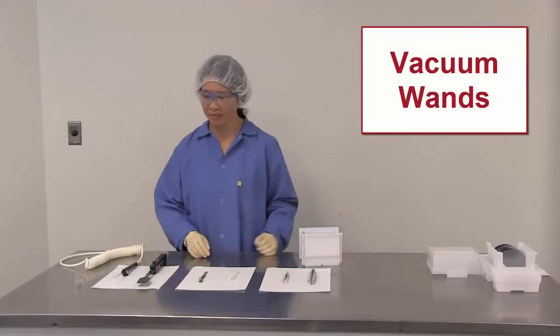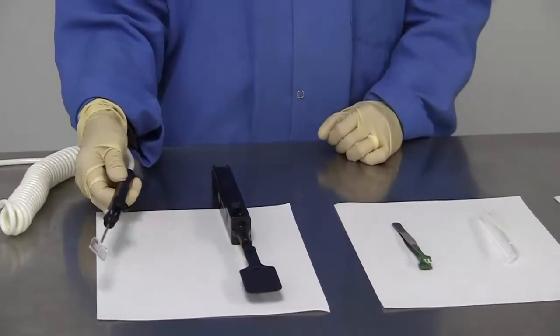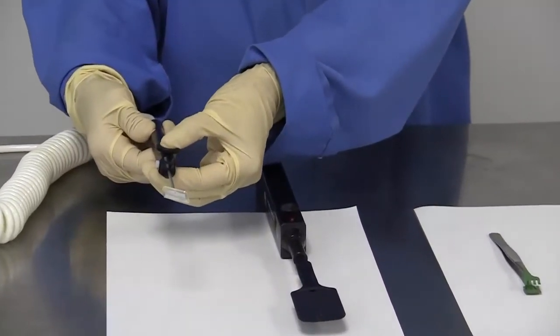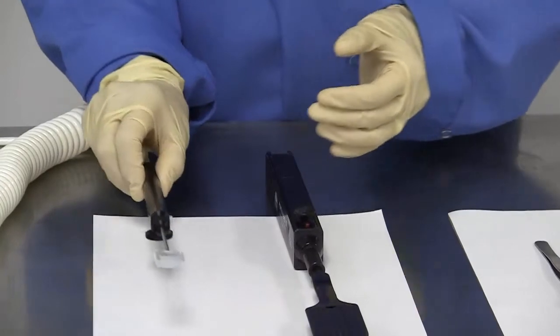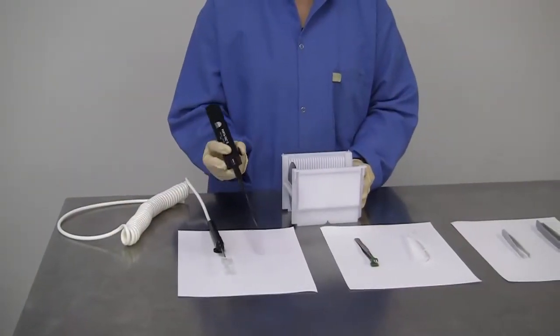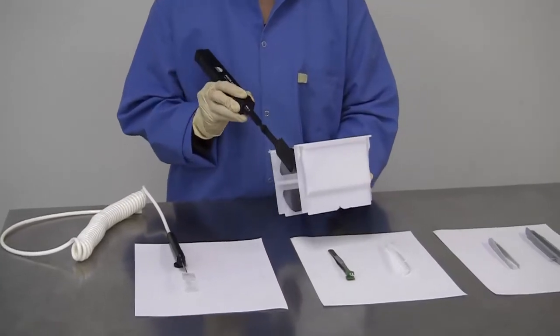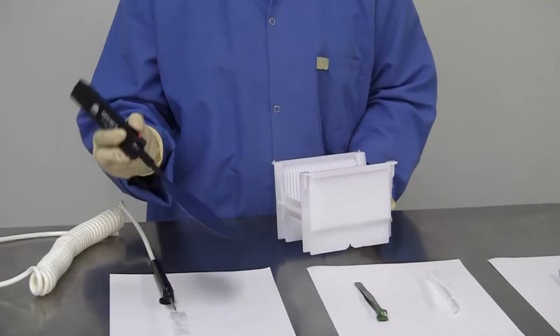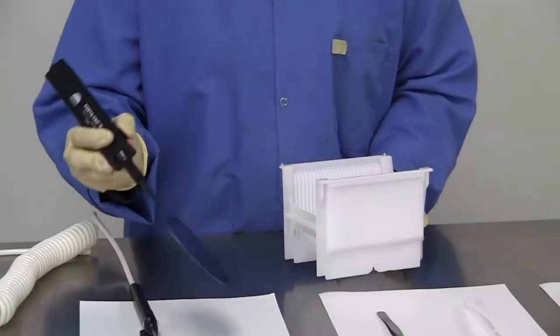A vacuum wand holds your wafer using a vacuum port on the paddle. There is a switch on the handle to allow you to turn vacuum on and off in order to pick it up and release your sample. To use, place the vacuum paddle on the backside of your wafer, with the back edge of the paddle contacting the wafer edge. Then turn on the vacuum. The paddle must be flat against the wafer in order for the wand to pick up.